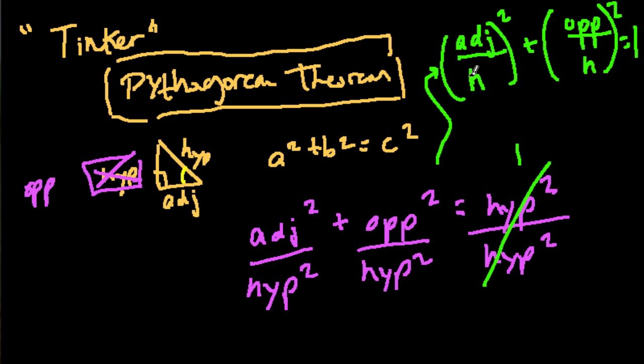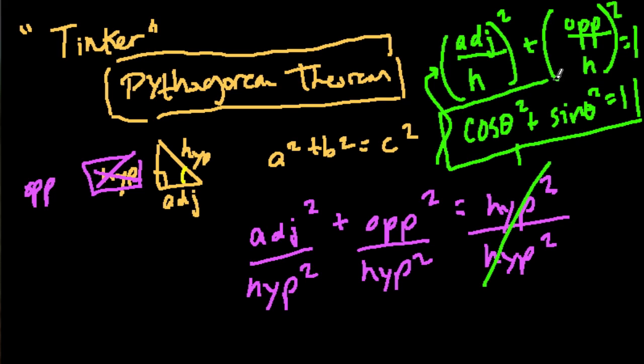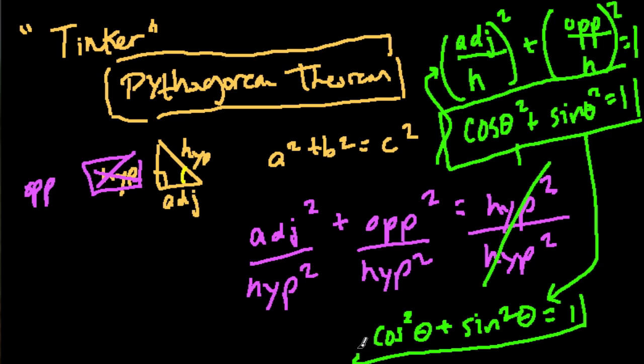Well, the adjacent over the hypotenuse, what's that? Think of our acronym, SOHCAHTOA. That's the cosine. So the cosine of theta squared, and this opposite over the hypotenuse, what's that? That's sine. So sine of theta squared equals one. And there is that equation that comes up so frequently. And you might even see it written like this: the cosine squared like that plus the sine squared of theta equals one.